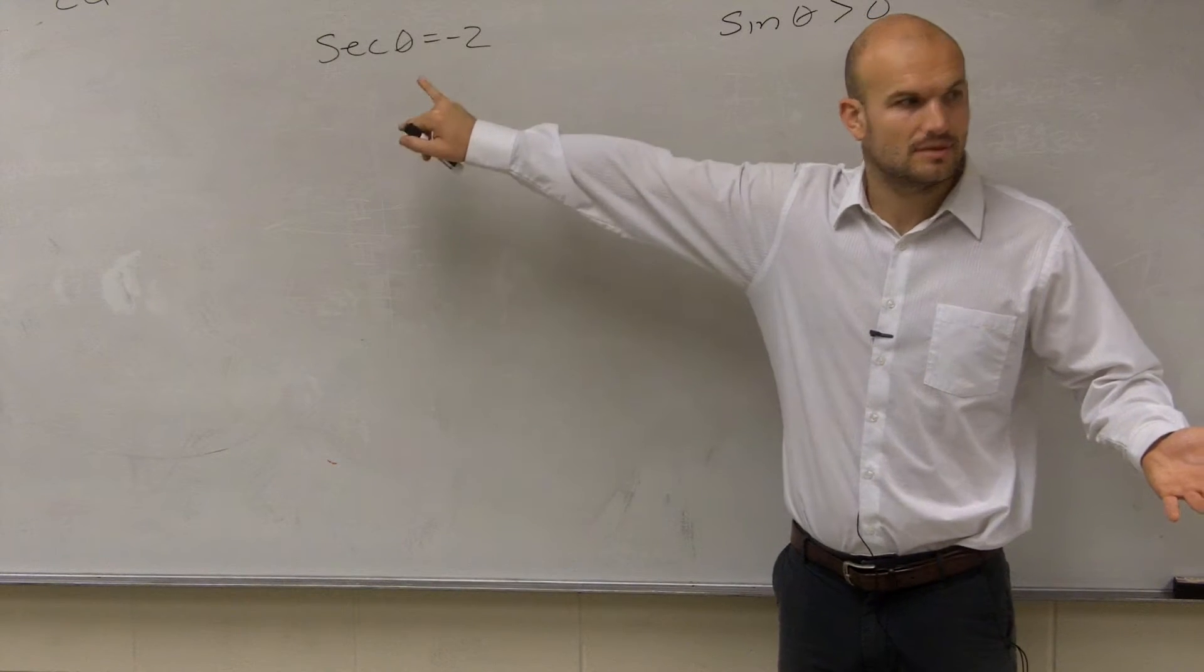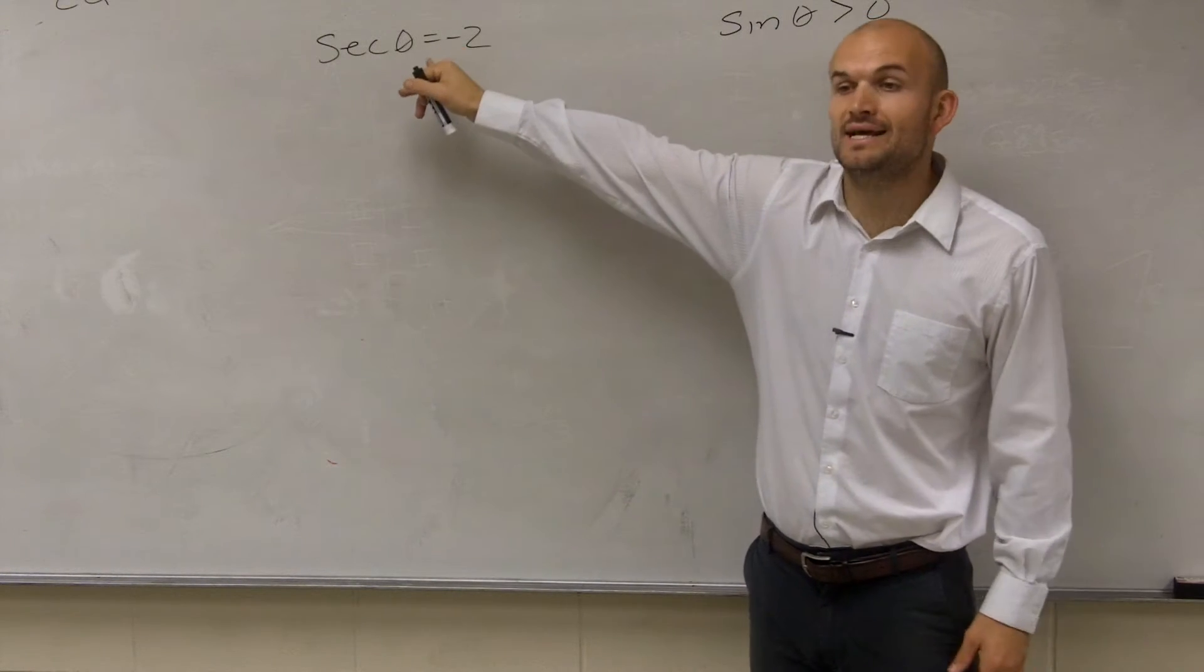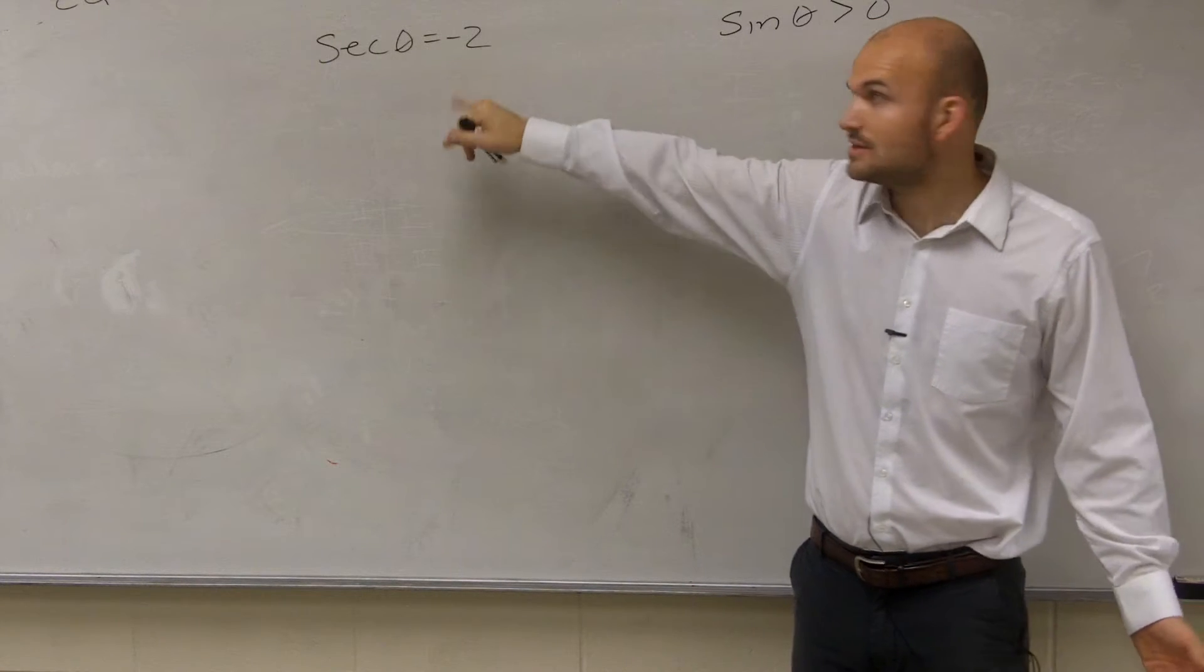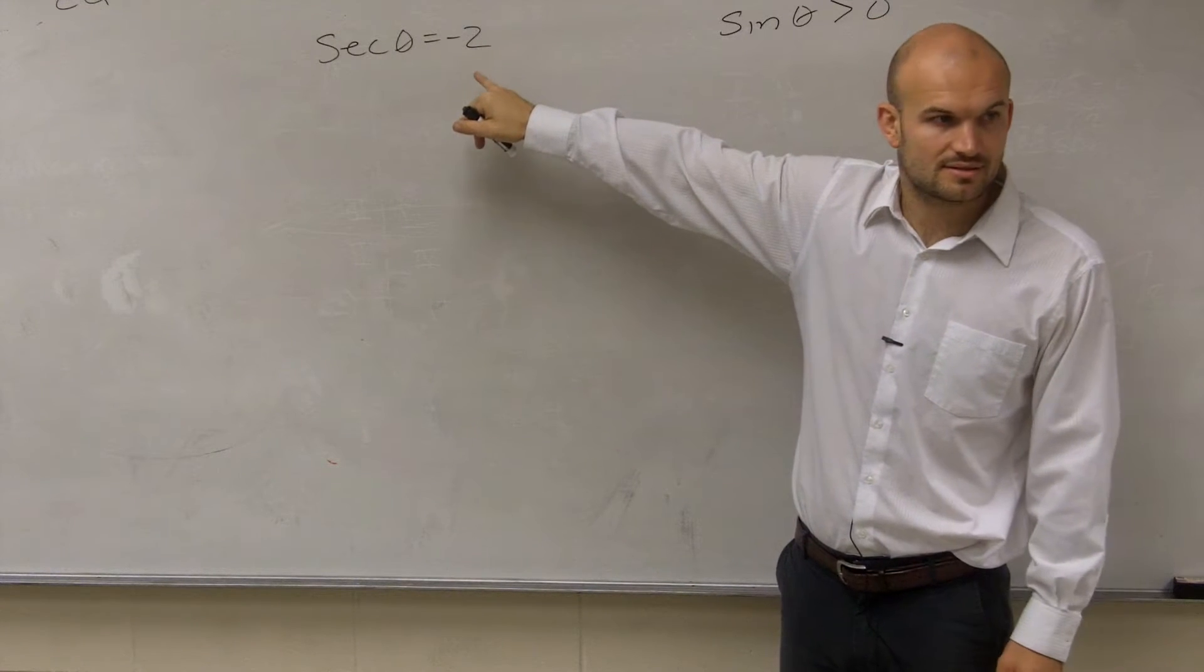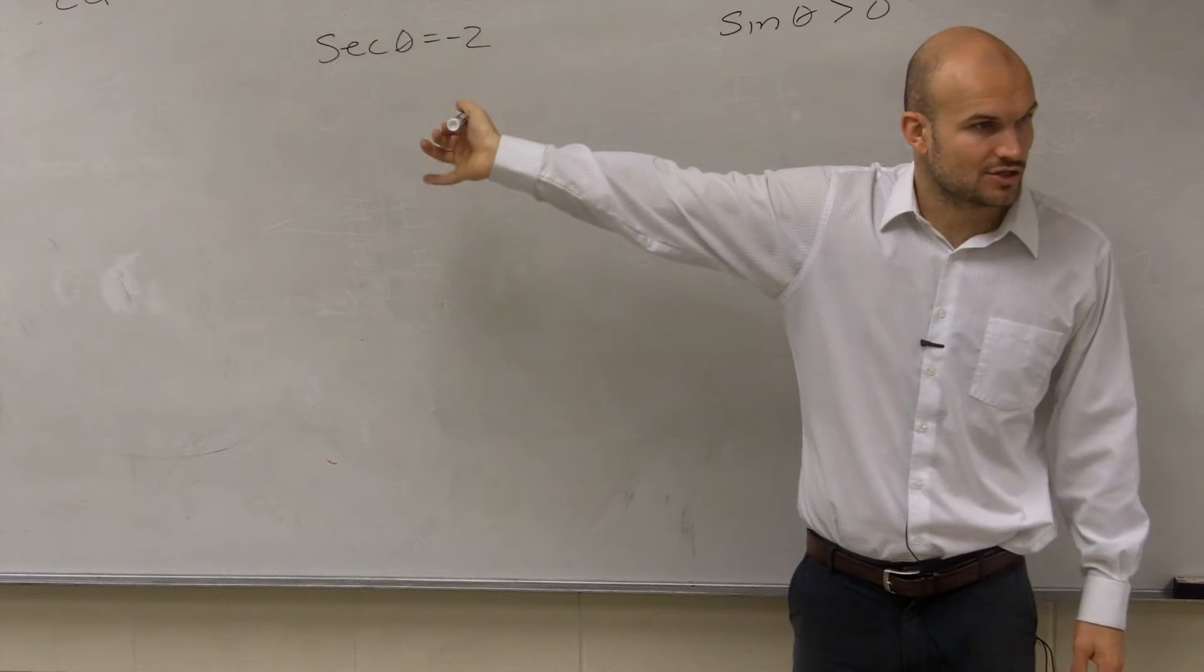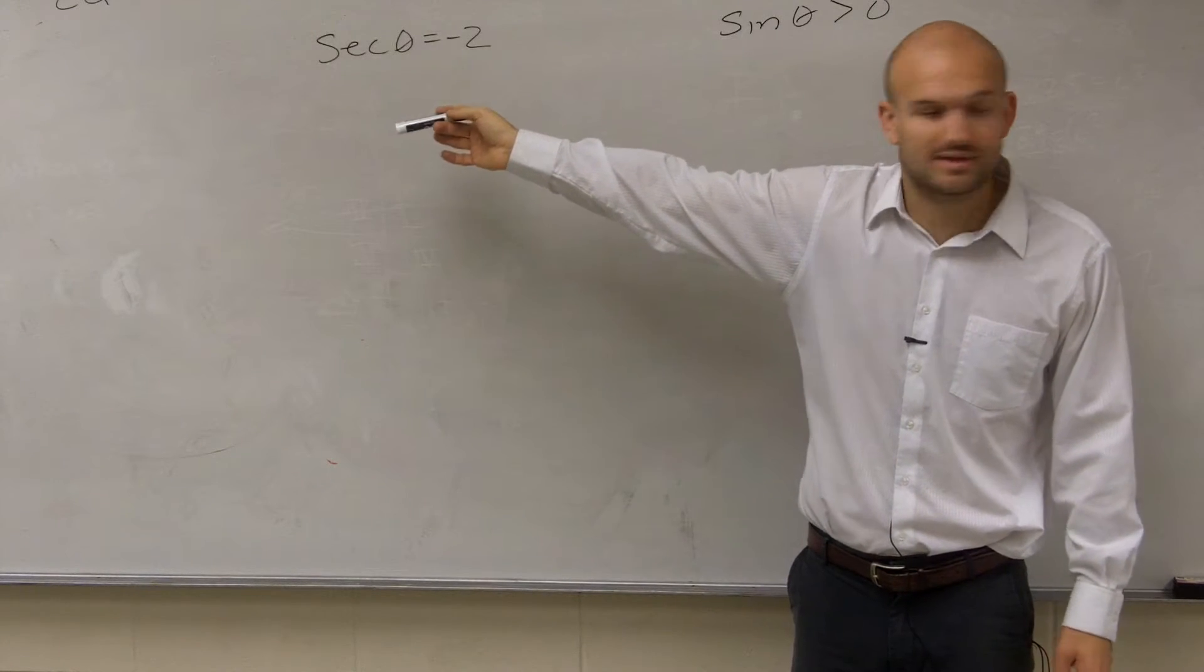Do we know the angle? No, right? Remember theta is representing your angle, so we don't know what the angle is. However, we know what the point is, which is negative 2. Is that on our unit circle that we've talked about, that we've worked with? No.